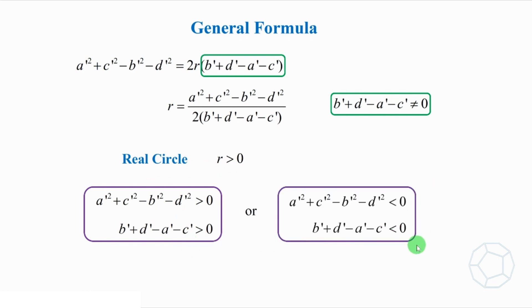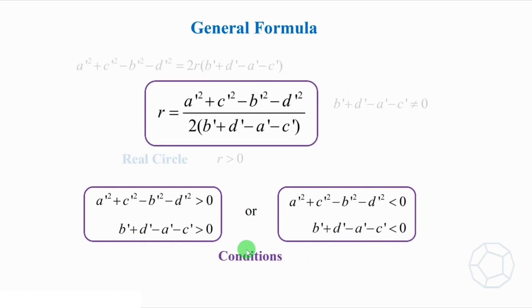In other words, we cannot randomly choose the lengths of the four sides. This is an essential condition to apply the formula.